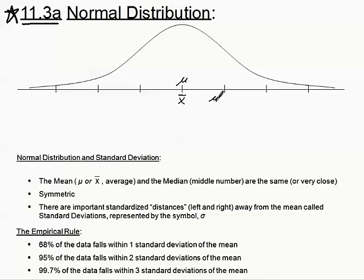If we go one unit above our mean — one standard deviation — that first tick mark would be mu plus sigma, or mean plus one standard deviation. The second tick mark would be mu plus two sigmas. The third would be mu plus three sigmas. So we can label our data points above the mean by adding one standard deviation at a time.